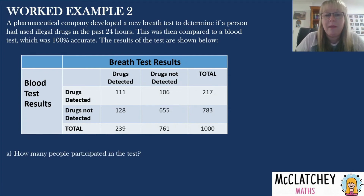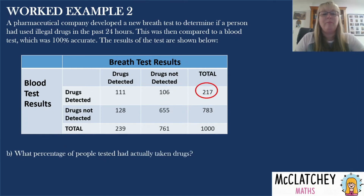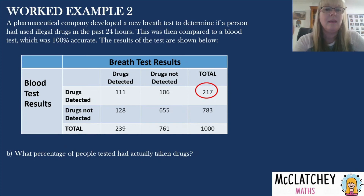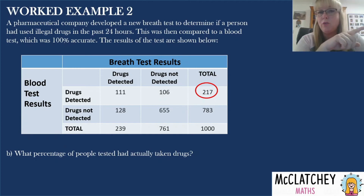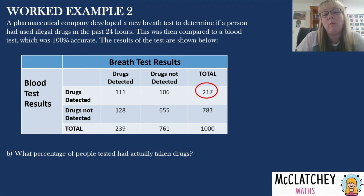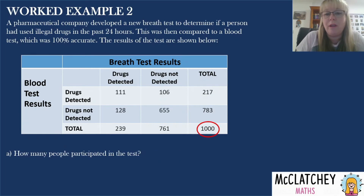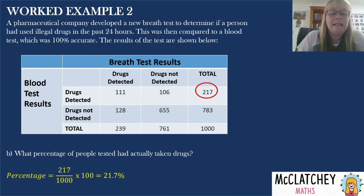This worked example involves analyzing an existing table rather than filling one out. The first question is: how many people participated in the test? Looking at the bottom right, we can see there were 1,000 people who did both the blood test and breath test. Next: what percentage of people tested had actually taken drugs? Since the blood test is 100% accurate, 217 people actually took drugs. So 217 divided by 1,000 multiplied by 100 gives us 21.7% of people had actually taken drugs.